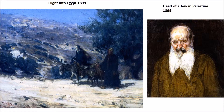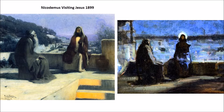We begin our second half of our look at Henry Ossawa Tanner. This is a period where we have a focus on religious Christian narratives, but at the same time his work becomes interesting because the influences of abstract art movements are seeping in. He's living in France, and we have Impressionism, Post-Impressionism, but also Cubism and Fauvism influencing his work.